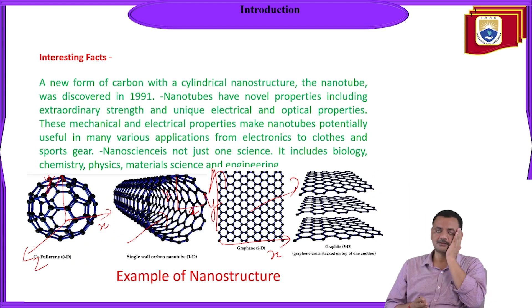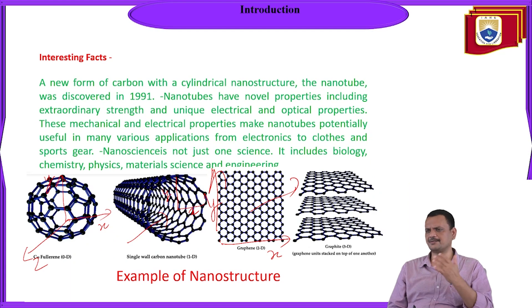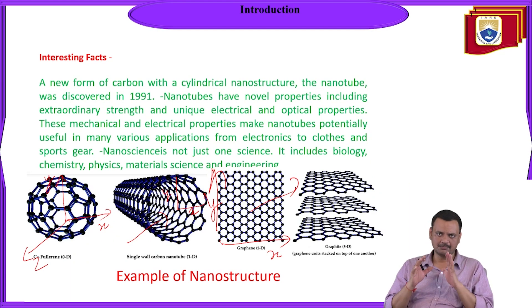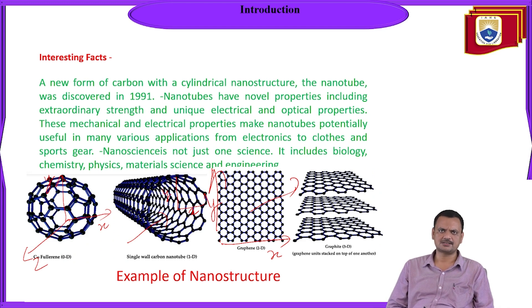An interesting fact about nanotechnology: a new form of carbon with a cylindrical nanostructure — the nanotube — was discovered around 1991. Nanotubes have novel properties, including extraordinary strength and unique electrical and optical properties, which are different from those of their bulk counterpart. These mechanical and electrical properties make nanotubes potentially useful in many applications, from electronics to clothing and sports gear. Nanotechnology and nanofibers are also used in the textile industry.